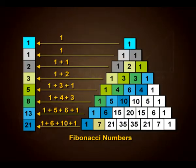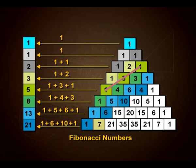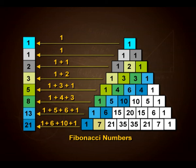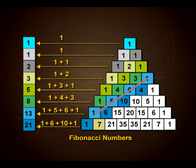Another interesting fact is about Fibonacci numbers. The Fibonacci sequence can be found in Pascal's triangle: other than the first two terms (1 and 1), each successive term is the sum of the preceding two. So 3=2+1, the next is 5=3+2, then 8=4+3+1, then 13, 21, and so on. You can trace each term of the Fibonacci sequence within Pascal's triangle.